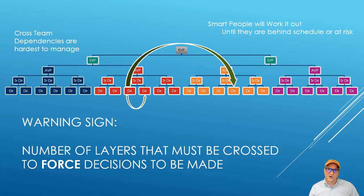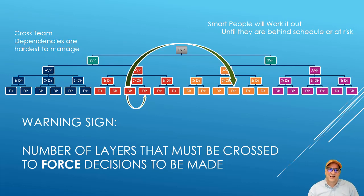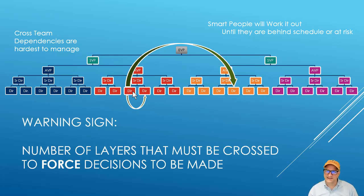How do you know you've got problems? With four AVPs, two SVPs, and an EVP, look at the number of layers that have to be crossed to force decisions to be made. If two teams are in the same org, they only have one boss to go through - if they can't get along, they can just go one level up. But if this red box needs to work with the orange box over here to get something delivered, and priorities become jammed up or compensation or rewards or infighting takes place, you actually have to go through seven layers.